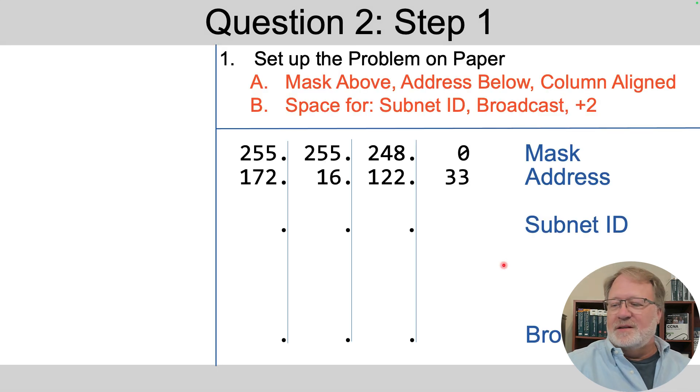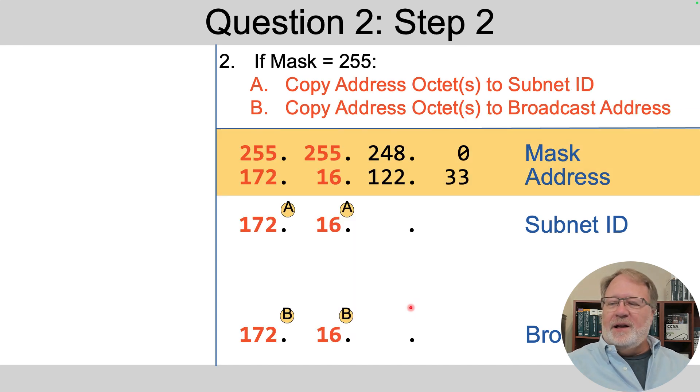All right, so here's the process. We write the dotted decimal mask, followed by the address, column aligned to make our workspace easy to work with. Then for any octets for which the mask is 255, we copy to the numbers below. There's two octets where the mask is 255, so we copy 172.16 below here.